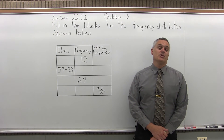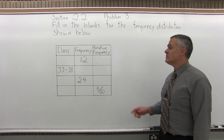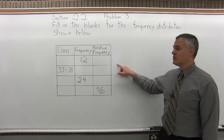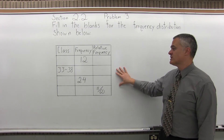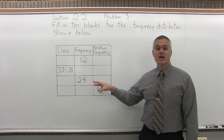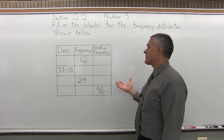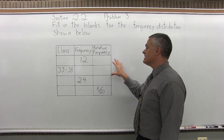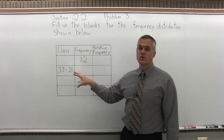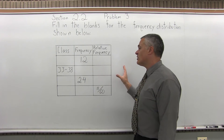This is Section 2.2, Problem number 3. It says fill in the blanks in the frequency distribution shown below, and we have a frequency distribution where about half of the spots are blank. You can really start in many different squares — you can start anywhere you want.